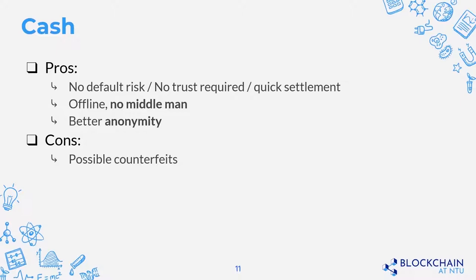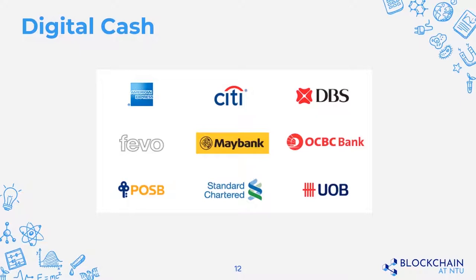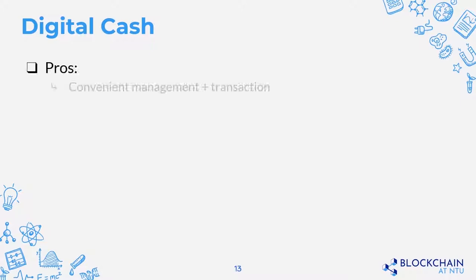The cons of cash: it's possible to make counterfeits, which is not new. More importantly, it's inconvenient — you must be physically present to transact, making cross-continental transactions almost impossible. To solve this inconvenience, people digitized cash. We now store money in banks like DBS or Citibank and conduct transactions digitally with no physical presence required. The pros of digital cash include convenience, cheap transactions, and security through regulatory scrutiny of big banks.